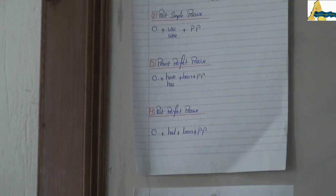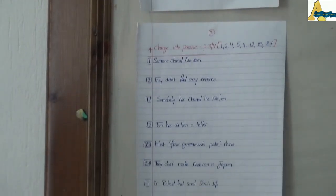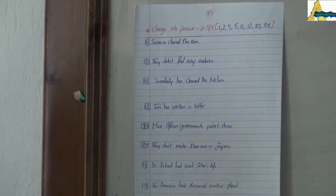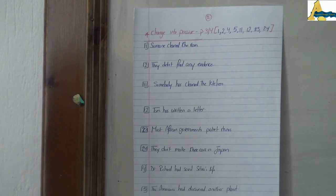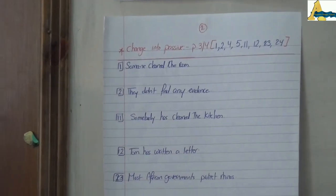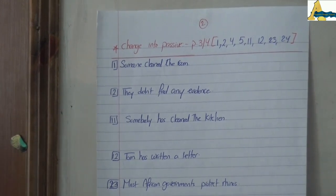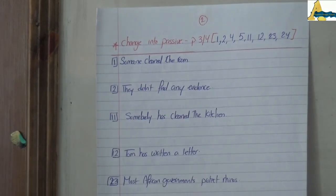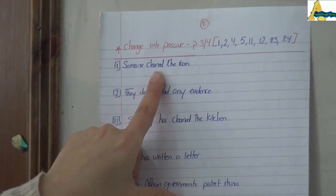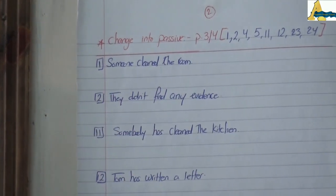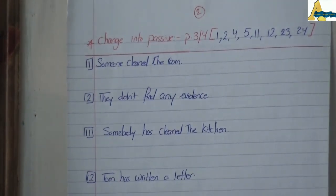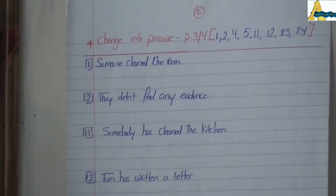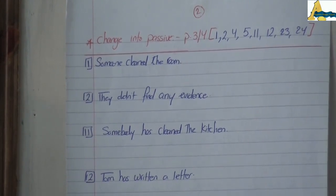Now let us answer some sentences. Bear in mind, you will find all these exercises in your revision booklet. First of all, change into passive. Look at the verb to identify the tense. In number one, 'someone cleaned the room' — cleaned is past simple active, so the answer is: the room was cleaned by someone. In number two, 'they didn't find any evidence' — the answer is: no evidence was found by them.